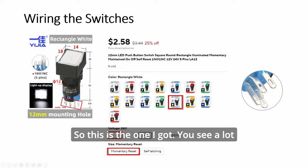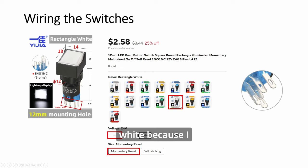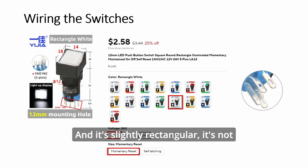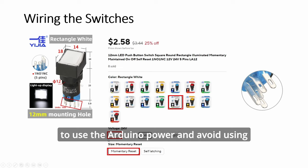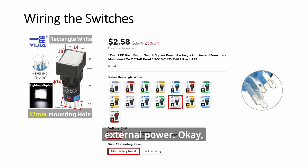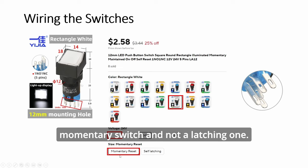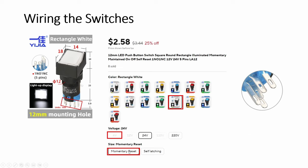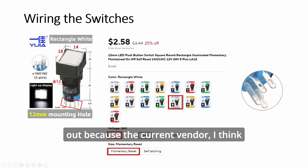So this is the one I got. You see a lot more legs here. It looks complicated. I will show you how to wire this. You want to look for white because I believe the light is white. And it's slightly rectangular. It's not square. Then you want to pick six volts to use the Arduino power and avoid using external power. Okay? And this has got to be a momentary switch and not a latching one. So this will be the perfect. Now this is grayed out because the current vendor, I think they have sold out the six-volt one.